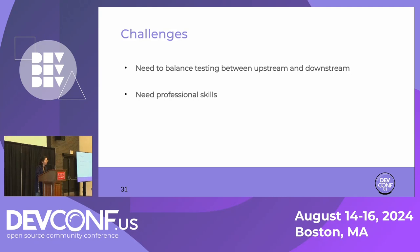A follow-up question about whether regression suites are run upstream on a regular basis, like monthly or every two weeks. It is not fixed. For downstream, there is a six-month release cycle with different workflow at each phase, so there may be more time for upstream testing when there is not much downstream work.